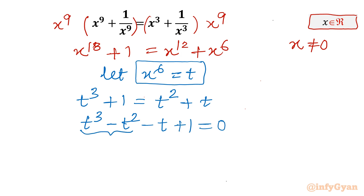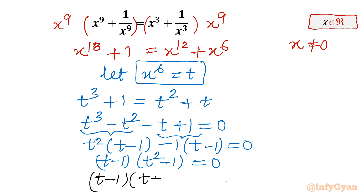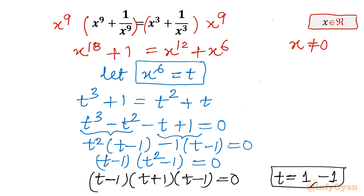From the first two terms, t² is common, so I take t² out leaving (t - 1). Minus 1 is common from the last two terms, giving (t - 1). This becomes (t - 1)(t² - 1) = 0. Using the difference of two squares: (t - 1)(t + 1)(t - 1) = 0. From here, t = 1 with multiplicity 2, and t = -1.